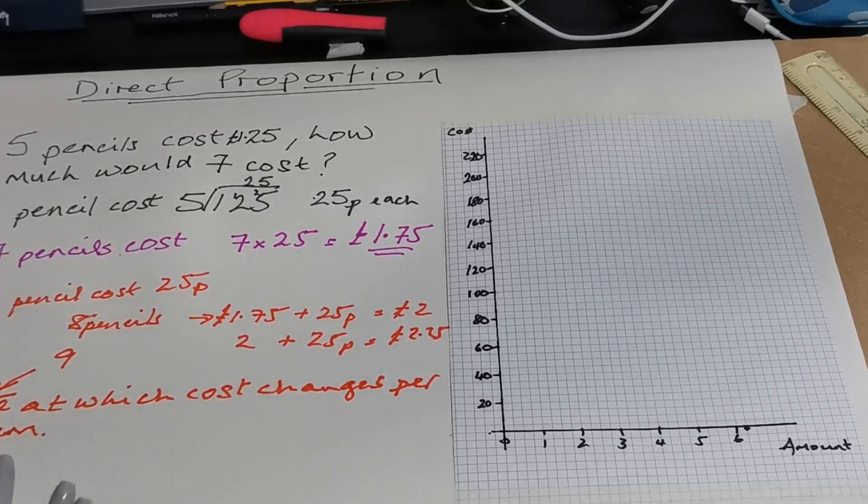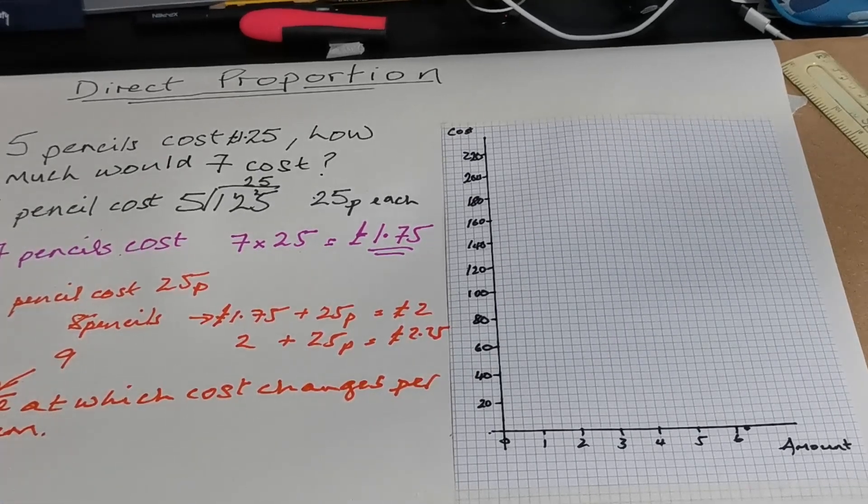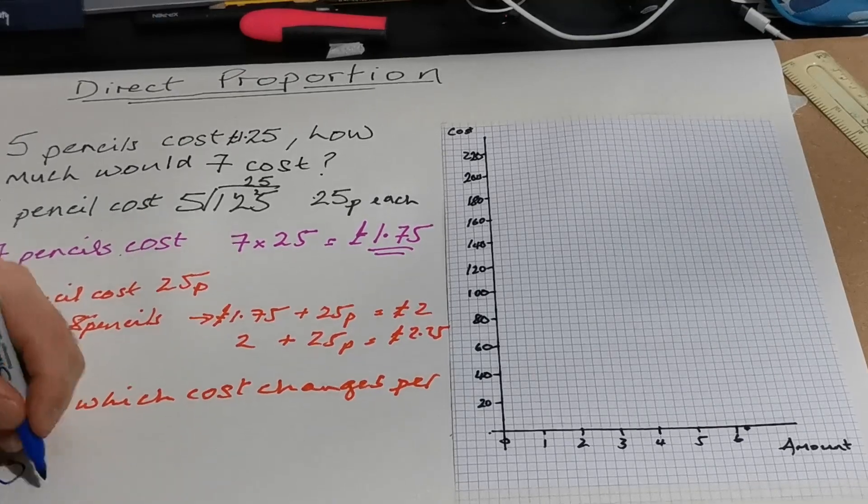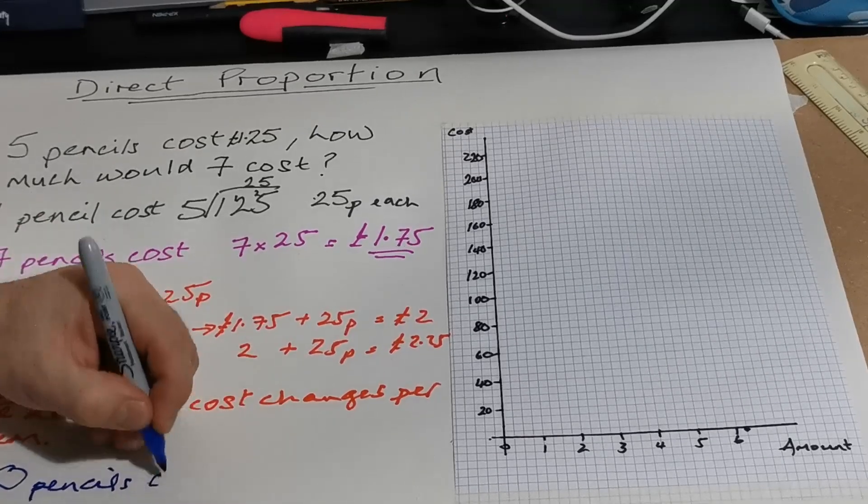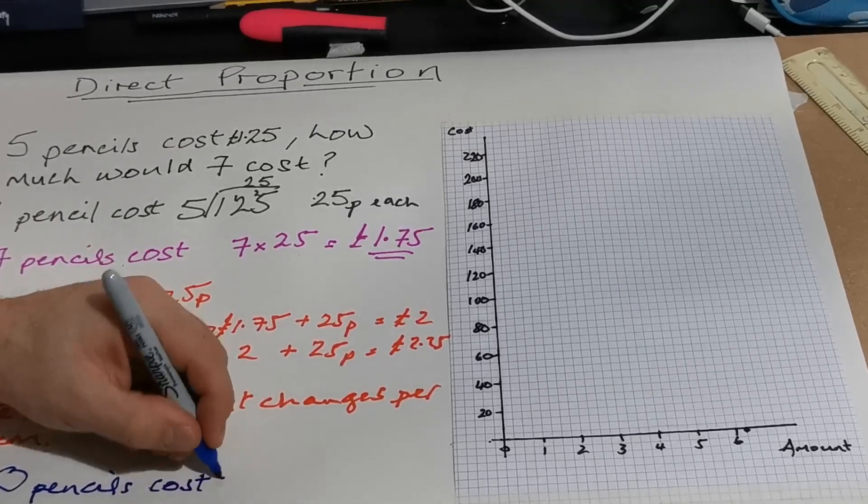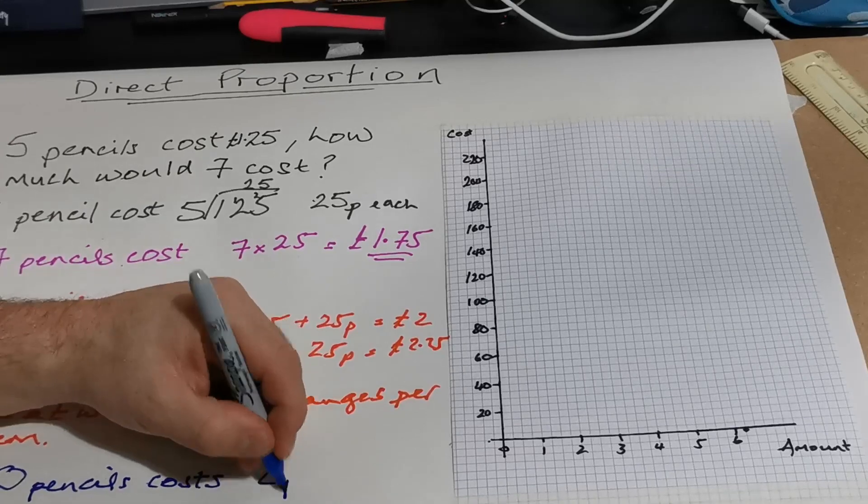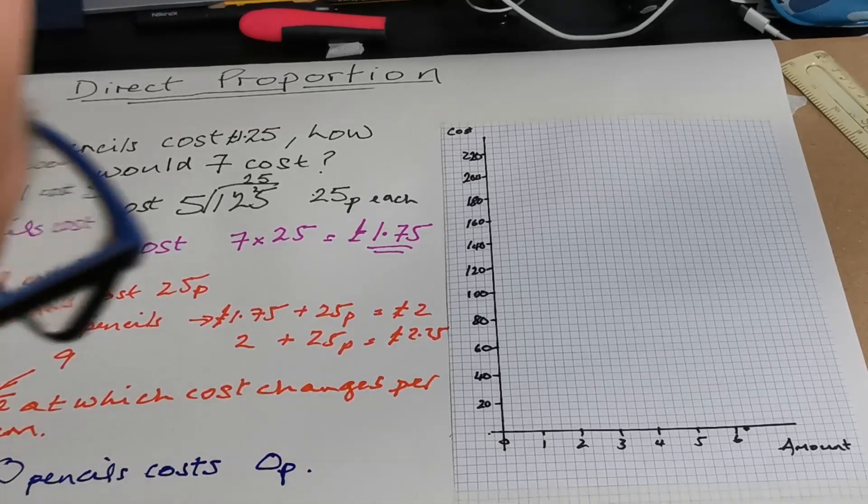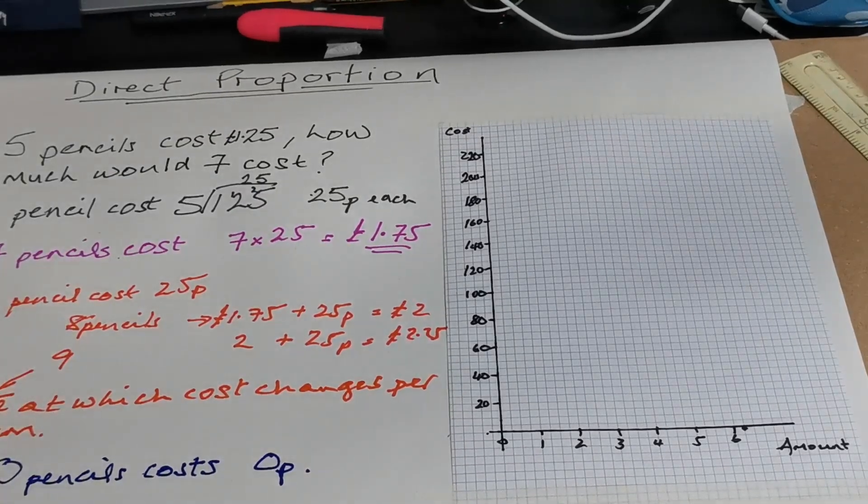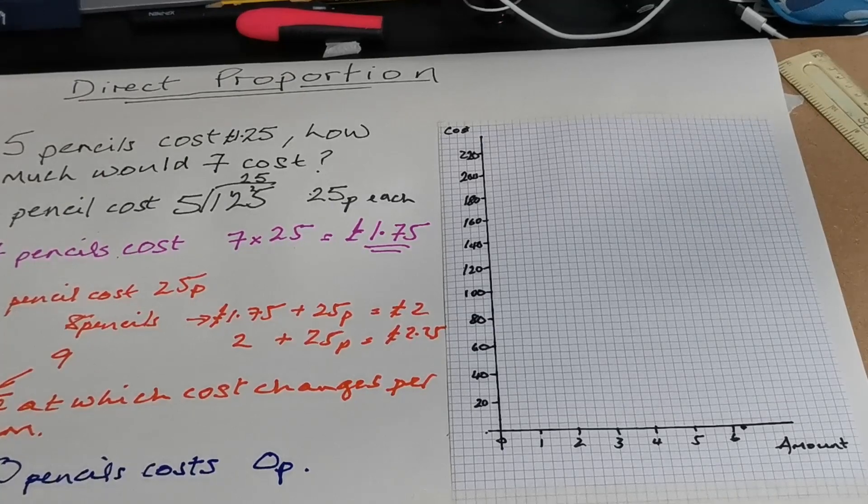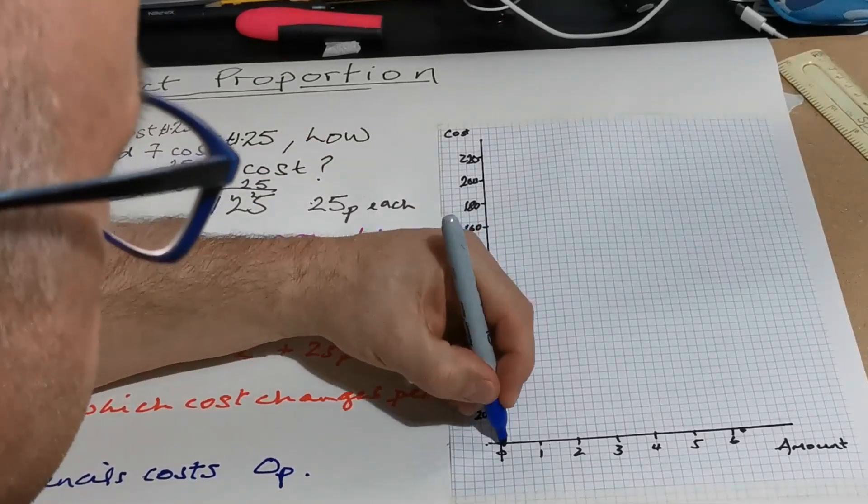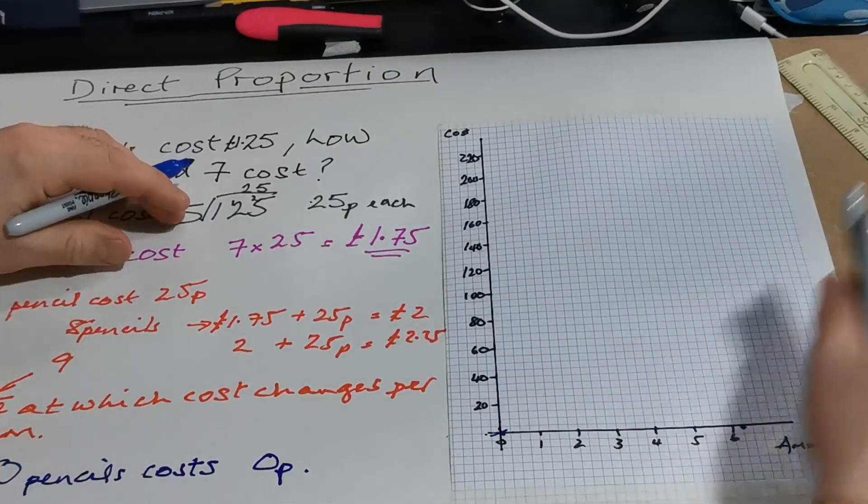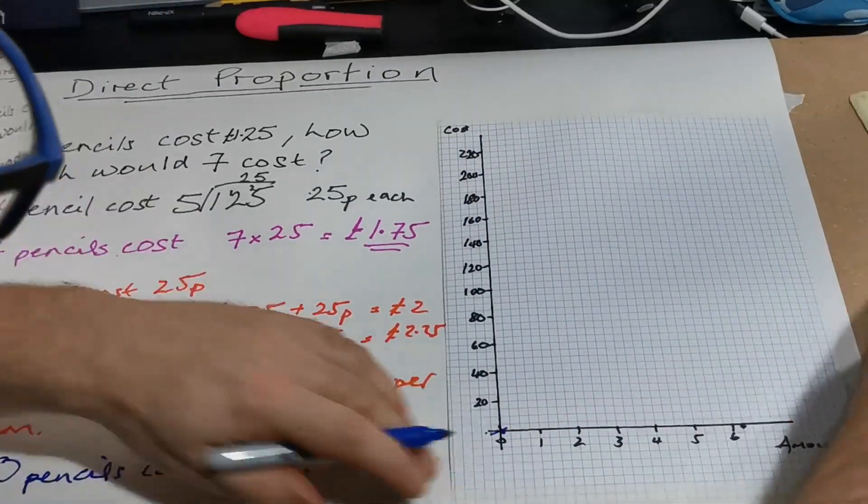Now another thing that's important to notice here is that zero pencils costs 0p. And it's quite usual in lots of maths to have a look at this graphically. Now I can see that we've got zero pencils costs 0p. So that puts me across just here.